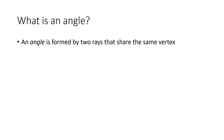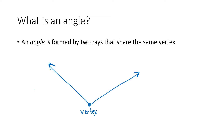An angle is formed by two rays that share the same vertex. So it might look something like this — there's one ray and there's another ray, and there's that vertex that is shared by those two rays, which we call the vertex of the angle.